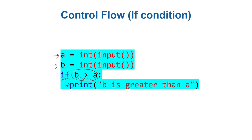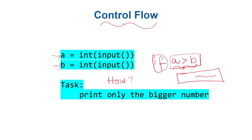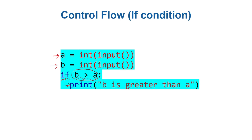Now, is the task done? The task was to print the bigger number. If `b` is greater than `a` then `b` will be printed — or we might just print `b` directly since `b` is bigger. But what if `b` is not bigger than `a`? What do we do then? If this condition is false, we need to handle that case — that's the question we'll now address in Jupyter Notebook.